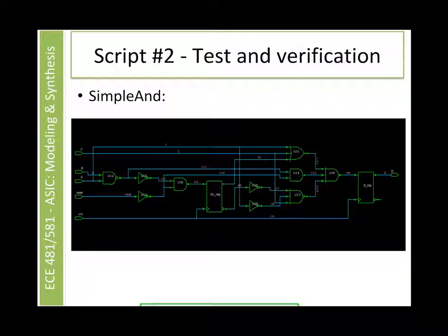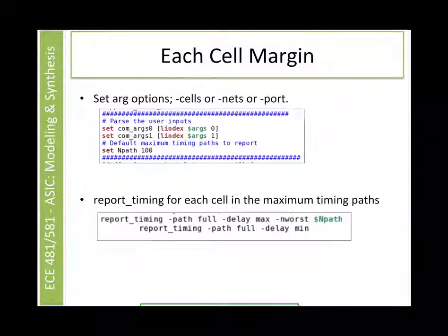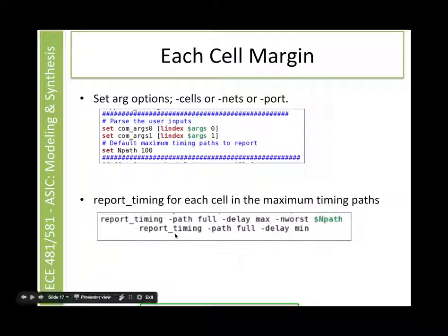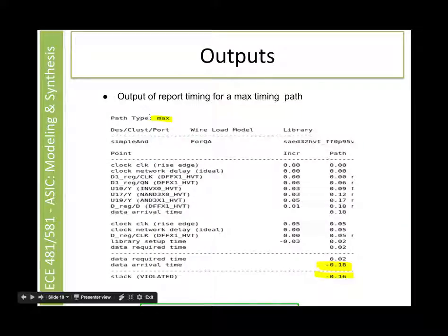As in script 1, we use the same simple design to test and verify our script. The user can specify if they want to see the cells or nets or port, and according to that we show the timing reports. In the script, if the user specifies a path or the cells along the path, this is what we show: the maximum and the minimum time.